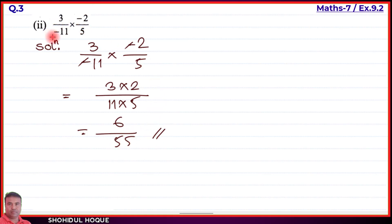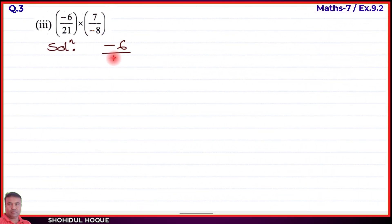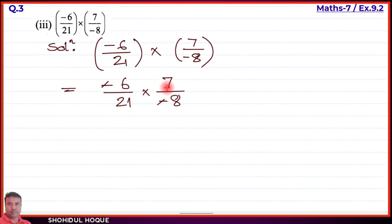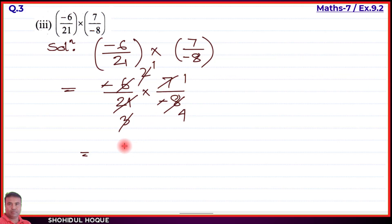Part number 3: minus 6 by 21 into 7 by minus 8. First, minus into minus cancels. Then we simplify: 7 divides 21 — 7 threes are 21, so 21 becomes 3. Then 6 divides by 3 — 3 twos are 6, so 6 becomes 2. And 8 divides by 2 — 2 fours are 8, so 8 becomes 4. Finally 1 on top and 4 below: 1 by 4 is the answer.